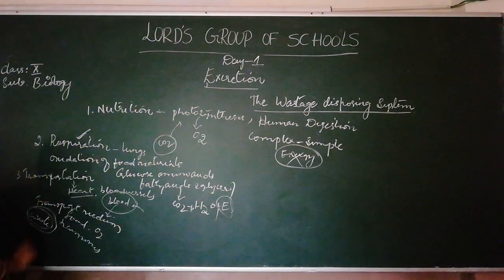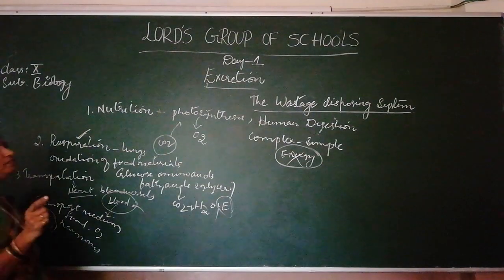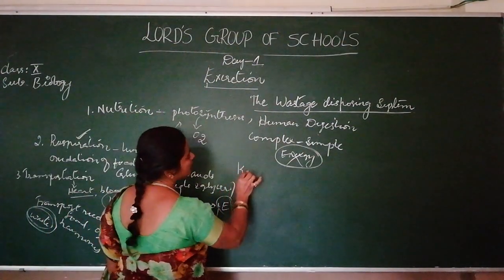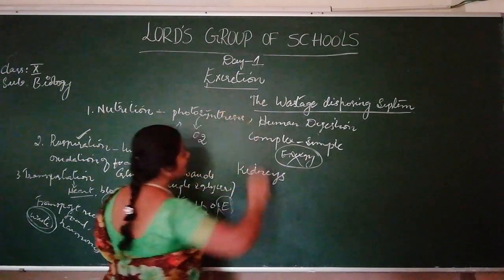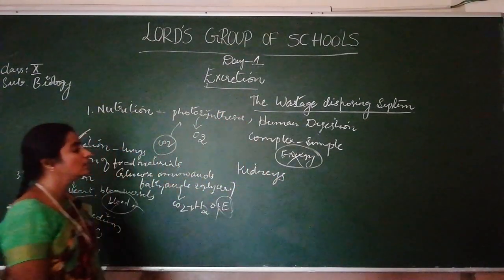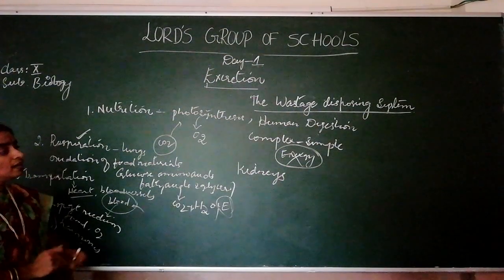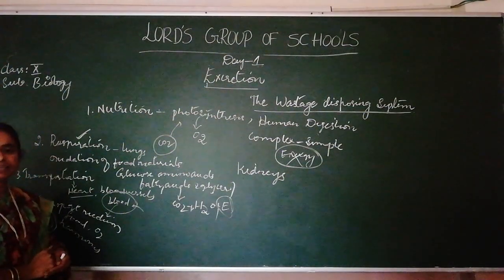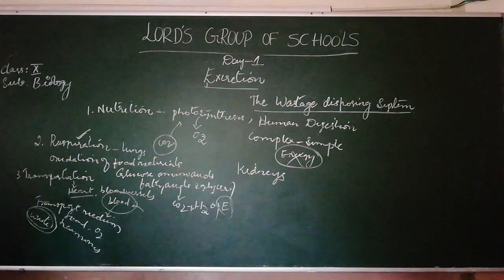Excretion is the life process which helps in eliminating waste materials from the body. The main excretion organs in the body are the kidneys. In this fourth unit, we are going to learn about the kidneys — their structure, their working, dialysis, kidney transplantation, etc.